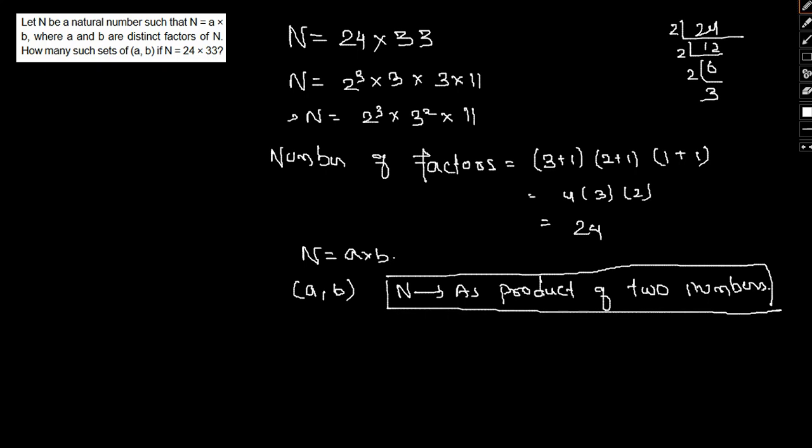Now look at one thing. We have total number of factors is 24, and this 24 factors can be written as 12 factors times 12 factors. If we do that, we can simply get the result.